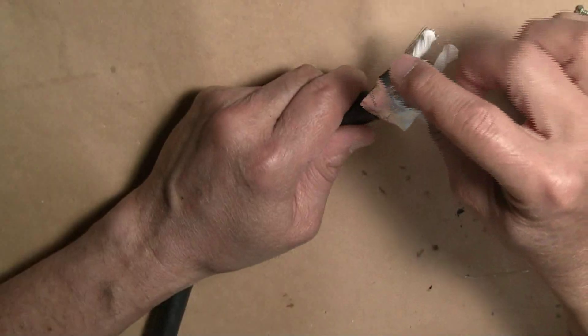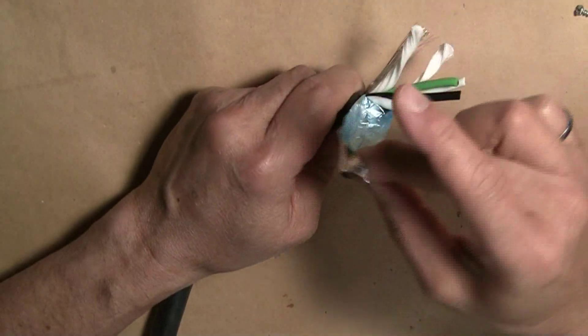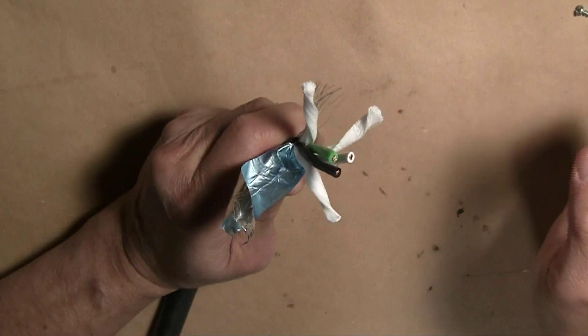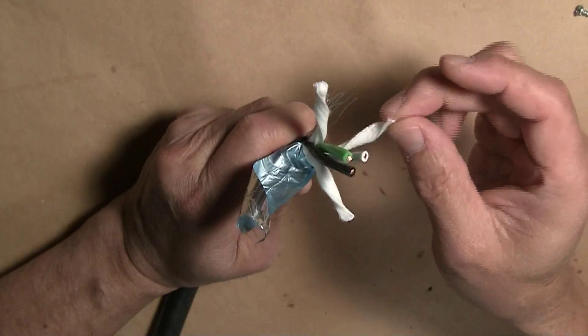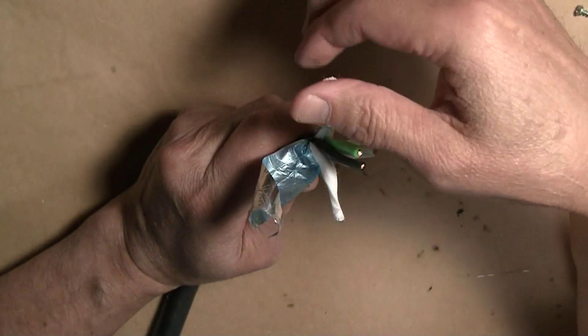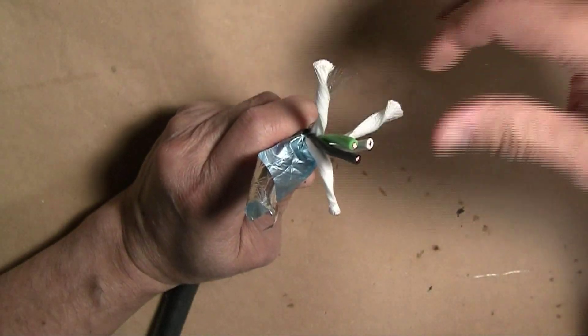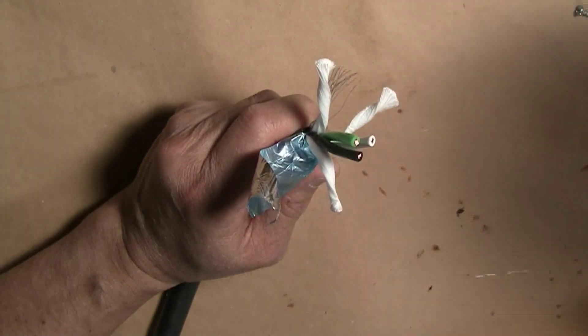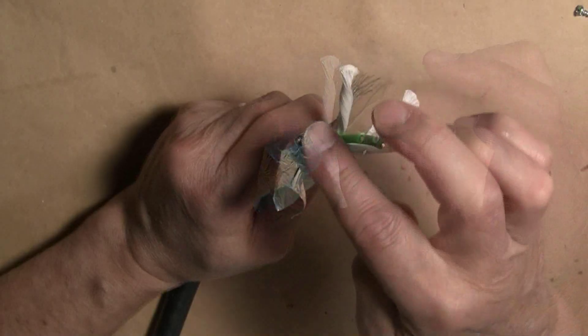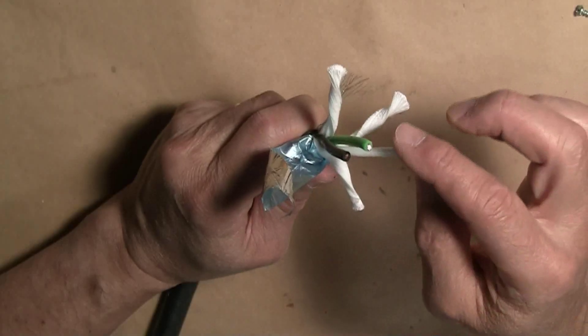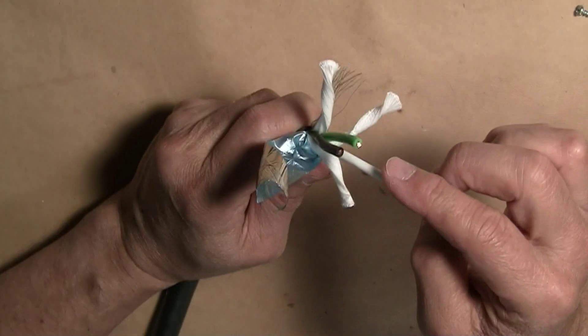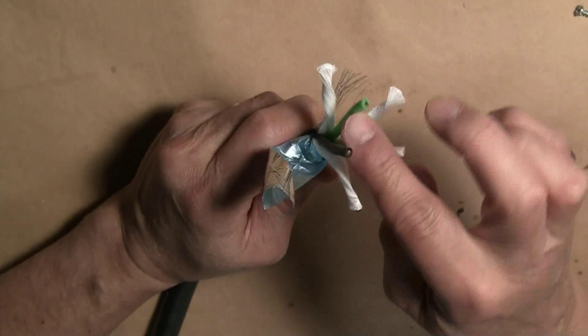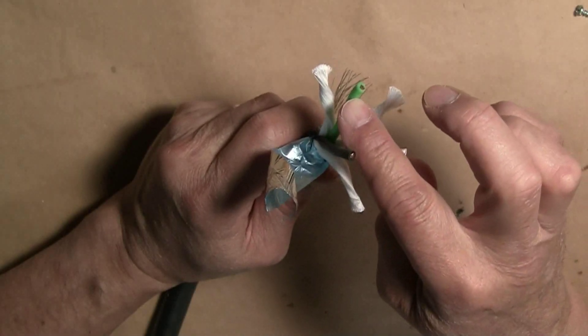I have unwrapped the shielding foil and you can see there are three probably cotton threads which act as separators for the three conductors. A black for the hot, white for the neutral, and green for the ground connector.